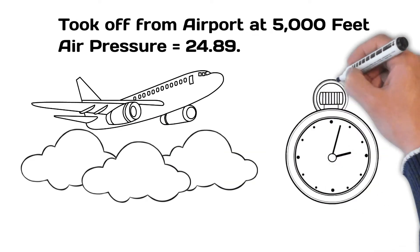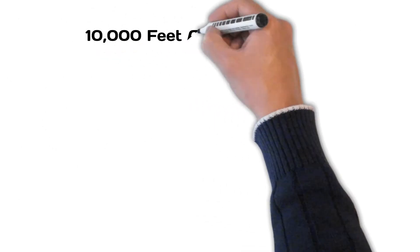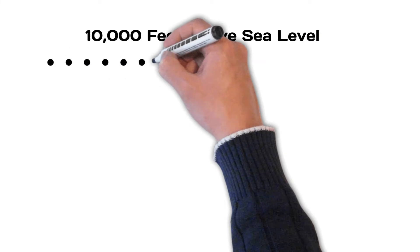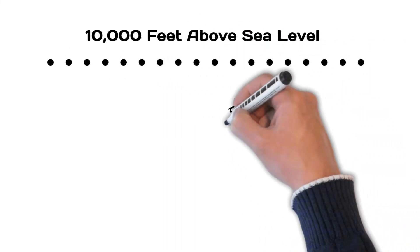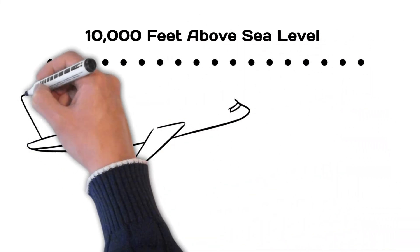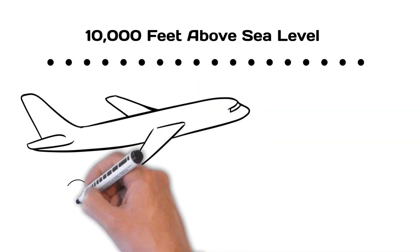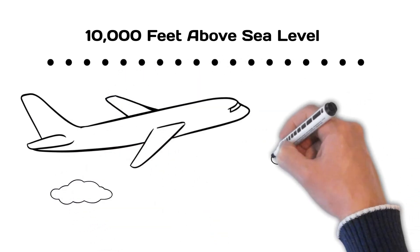Now, say we flew up to an altitude of 10,000 feet. If we didn't adjust the altimeter to the correct altimeter setting, our altimeter would show an altitude of 5,000 feet, but we would really be 10,000 feet above sea level.